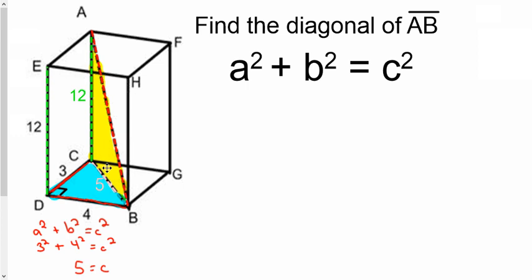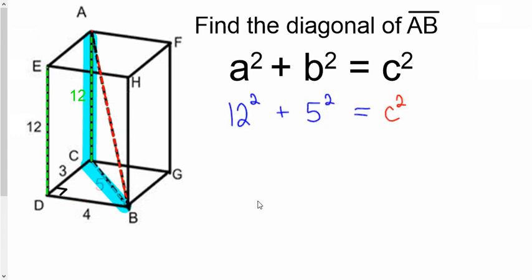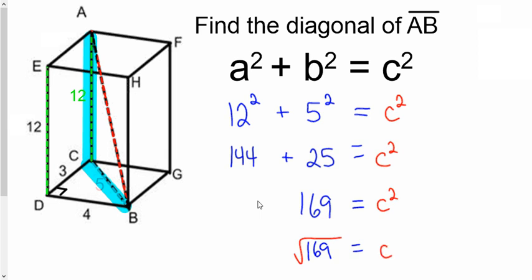And now we can go find the hypotenuse of the yellow triangle to go find AB. So it's like a two-step problem. And we plug in the 12 and the 5 in the legs. So 144 plus 25 equals C squared. 144 and 25 is 169 equals C squared. How do we get the square off the C? Put a square root on the other side. And that would make it 13.